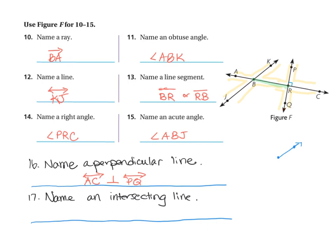The next one is name an intersecting line. This perpendicular pair is technically intersecting, but I also have another intersecting line that's not perpendicular. Line JK and line AC intersect at point B. There's no symbol for intersecting, so we have to write it out: line AC intersects line JK at point B.